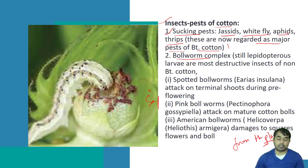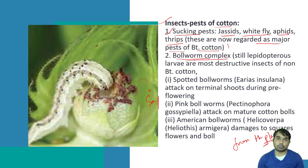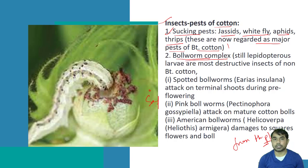These sucking pests are now regarded as major pests because the maximum area is now covered by Bt cotton, and Bt is resistant against the boll worm complex. So what is happening is that those insects previously considered minor are now becoming severe pests because of the suppression of boll worm complexes and other Lepidopteran larvae.